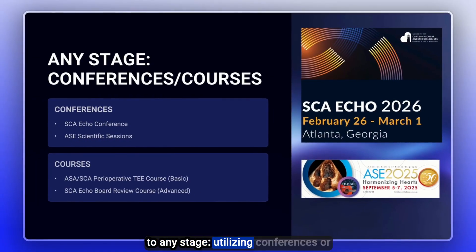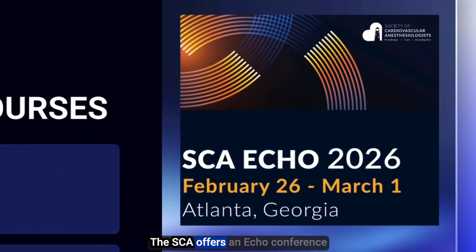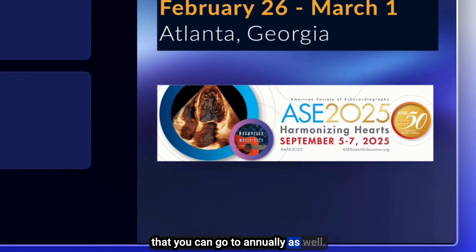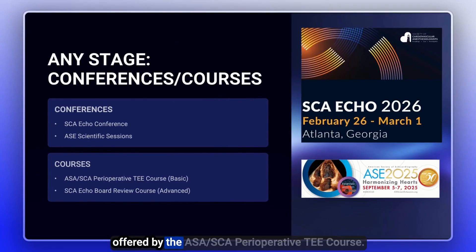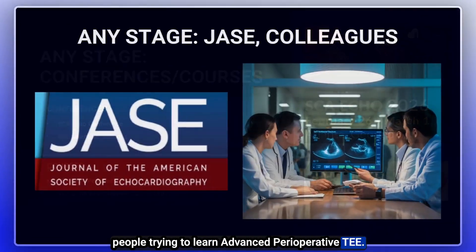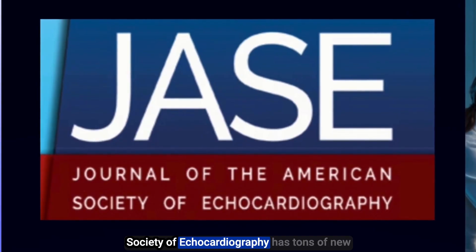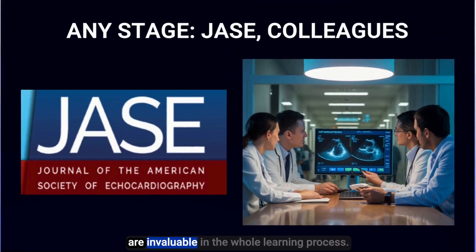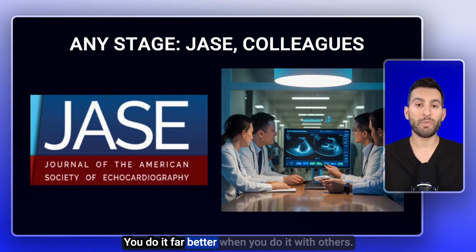Another tool applicable to any stage is utilizing conferences or coursework. The SCA offers an echo conference early in the year — a very high-yield course exposing you to all sorts of new material. The ASE also has scientific sessions you can attend annually. Specific courses I'd recommend are the ASA SCA perioperative TEE course for basic learners, and the SCA echo board review course for advanced perioperative TEE. Finding colleagues along the way to share exam findings and participate in educational discussions is invaluable — you can't do this alone.